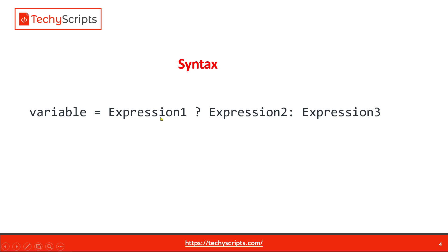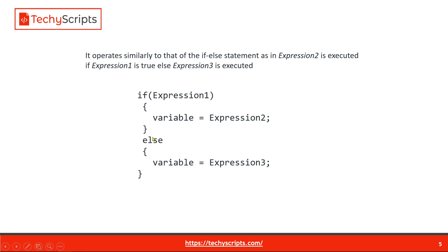We have a variable and three expressions. Between expression one and expression two there is a question mark sign, and between expression two and expression three there is a colon. This is the structure of the ternary operator. In the case of an if-else statement, if expression one is true, the result will be expression two; otherwise, if expression one is false, the else part will be executed.